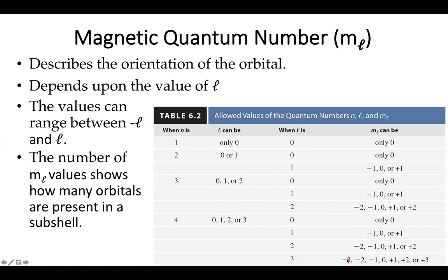When l becomes two, we now introduce an m sub l value of negative two, negative one, zero, one, and two. And so on. When we go to l equals three, we go from negative three to three.